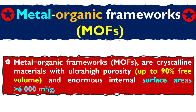MOF is a crystalline material with ultra-high porosity, up to 90% free volume. This means that if we look into this MOF material, 90% of its volume is empty — composed of pores — and only 10% is the concrete body. Because of that ultra-high porosity, this material achieves an internal surface area of about 6000 m² per gram.